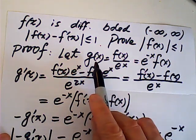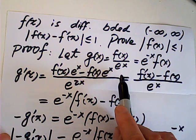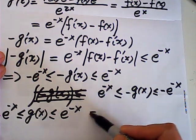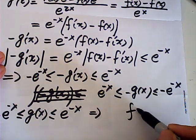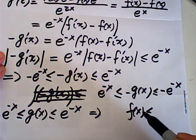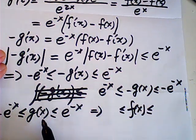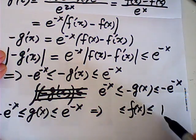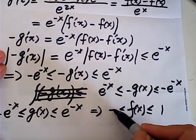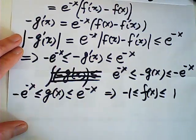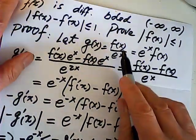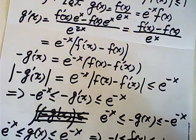So g of x is f of x over e to the x. Therefore, f of x would be between g of x times e to the x. This one becomes negative one and one. Because g of x equals f of x over e to the x.